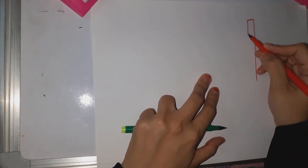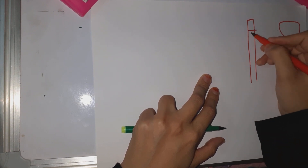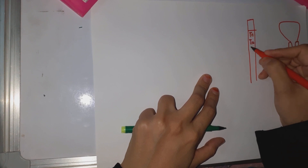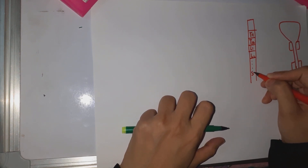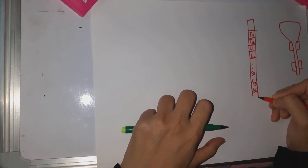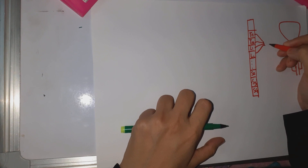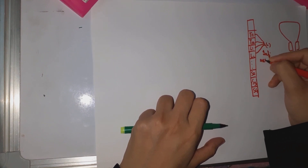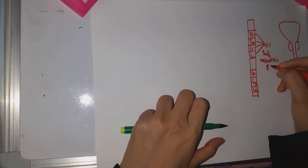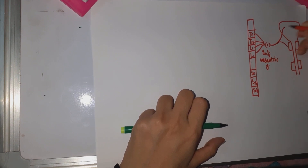Now referring to the spinal cord diagram with the bladder alongside it — from T11, T12, L1, L2 comes the sympathetic nerve supply. From S2, S3, S4 comes the parasympathetic nerve supply, which travels down and forms a ganglia called the inferior mesenteric ganglia.